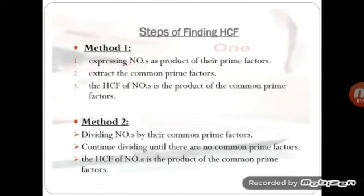Let's see how it works. There are three steps in method one. First step is expressing numbers as a product of their prime factors. Second step is taking out the common prime factors of these numbers. Finally, multiplying these common prime factors to obtain the HCF of the given numbers.